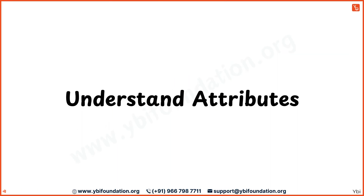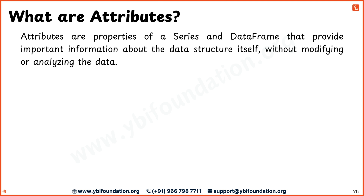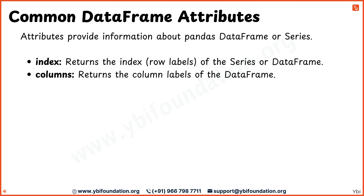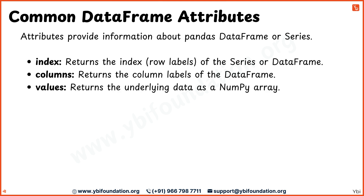Now understand the basic attributes of pandas Series and DataFrame. Attributes give us important information about the structure of a dataset without modifying or analyzing the data. Index attribute returns the index or row labels of a DataFrame or Series — this tells us how rows are labeled, whether by default numbers or custom labels. Columns attribute displays the column labels or column names of a DataFrame. Values attribute returns the underlying data of a DataFrame or Series as a numpy array, allowing us to see raw data without any labels.